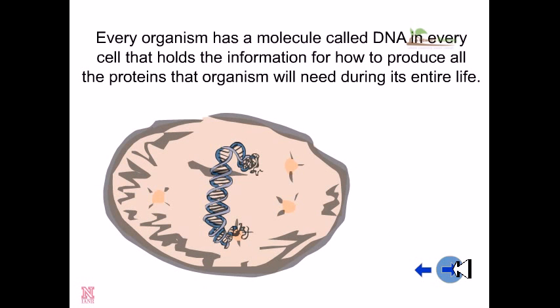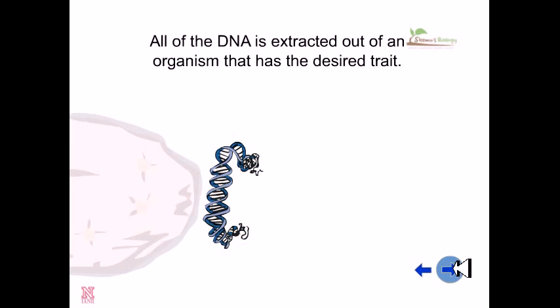Every organism has a molecule called DNA in every cell that holds the information for how to produce all the proteins that organism will need during its entire life. All the DNA is extracted out of an organism that has the desired trait.